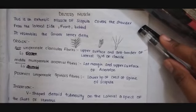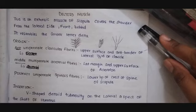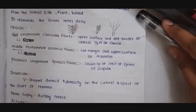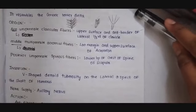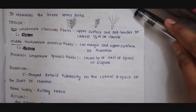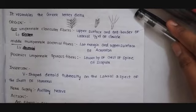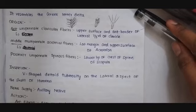Now let us discuss about the insertion of the deltoid muscle in detail. The deltoid muscle is inserted in the deltoid tuberosity, which is present on the lateral aspect of the shaft of the humerus. This deltoid muscle is supplied by the axillary nerve.